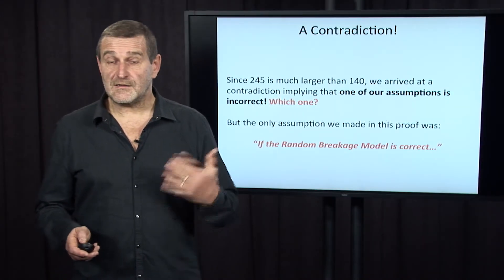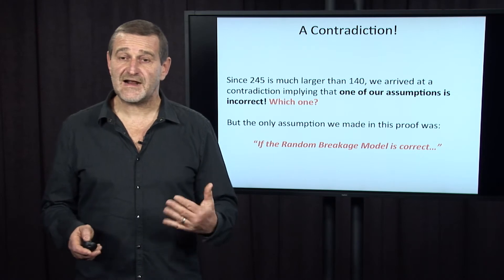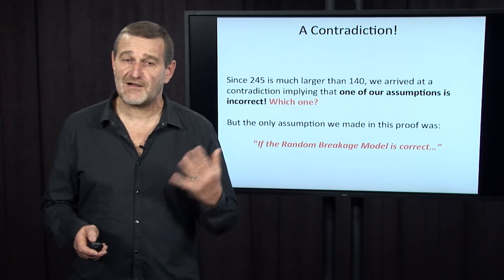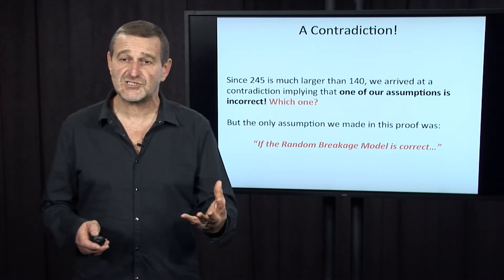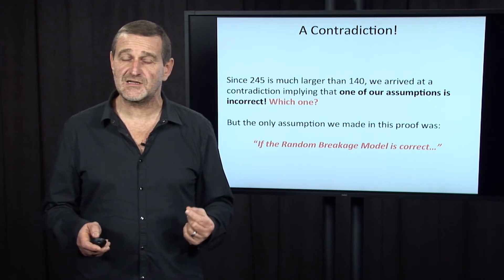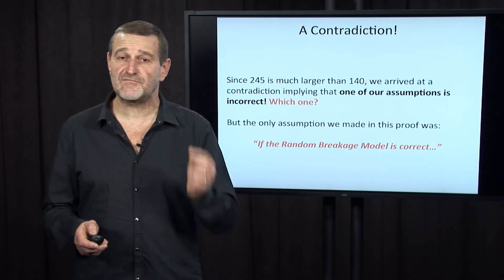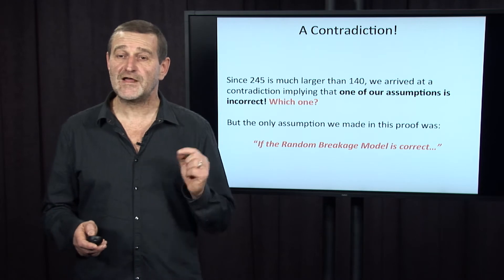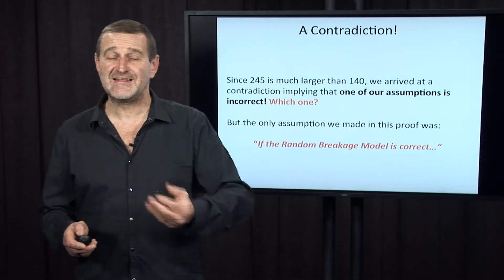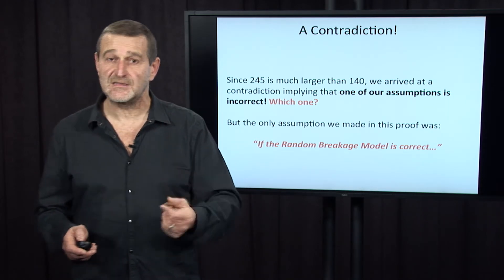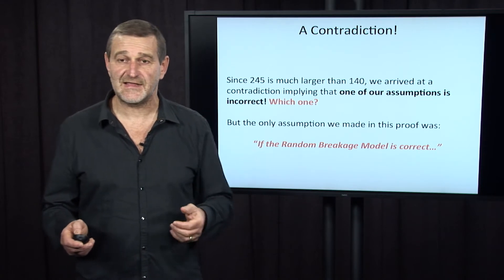We demonstrated that the random breakage model is incorrect, but of course we have not provided you with the location of fragile regions in the human genome. This is an example of a non-constructive proof — when we prove that something is wrong, but cannot provide the certificate showing where the fragile regions are located.